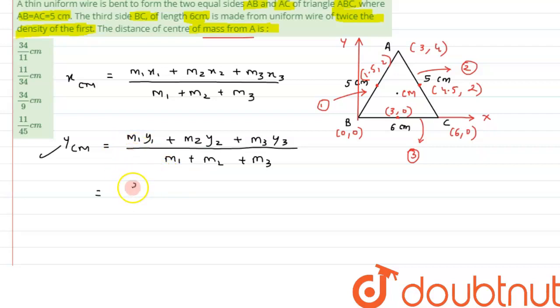So we can write it as density has been given to be as rho so rho into length will give the mass so we will multiply it with length has been given as 5 into y1 the coordinate is 2. Plus of similarly for m2 we can write rho 5 into 2 again. Plus for m3 we can see here the y coordinate is zero so this term will become zero.